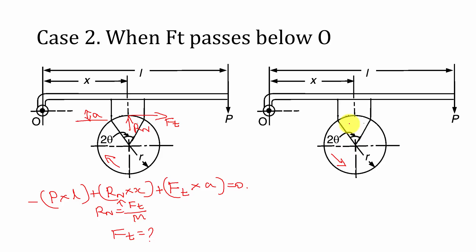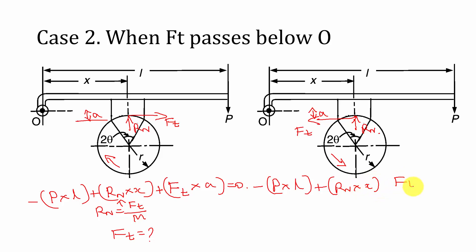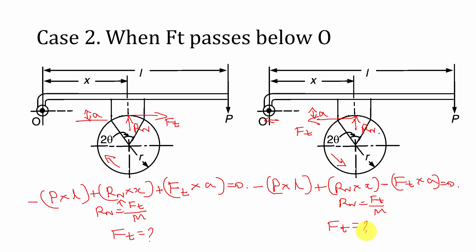If this rotates in the anti-clockwise direction, Ft acts towards the left side with perpendicular distance A, and Rn acts upward. Taking the moment about O: minus P into L, plus Rn into x, minus Ft into A — because Ft is rotating in the clockwise direction, so the direction is minus — equals zero. Here also you can replace Rn with Ft/μ and calculate the value of Ft. This is Case 2.